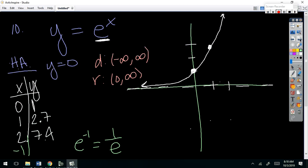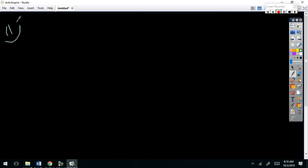Number 11. This is a natural log. Do you remember learning about natural log? Natural log is the same thing as a log with a base of e. It is the inverse of the e graph.